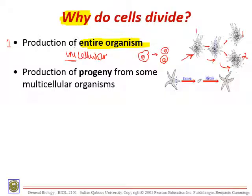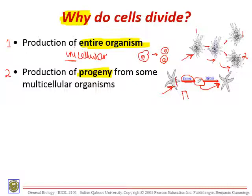The second point is production of progeny from some multicellular organisms. For example, a starfish — fission means breaking down, and from a broken-off part you can produce a full organism. Another example: a part of a plant that is cut can produce a whole new plant with leaves and all the other organs. So this second point concerns multicellular organisms.